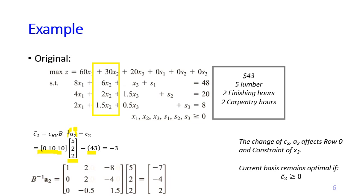And then we also compute the new column for X2 using the formula of B inverse AJ. B inverse does not change. But then A2, we use the new column 5 to 2 to become the new A2. And then we get the new column for X2 is minus 7, minus 4, and 2.